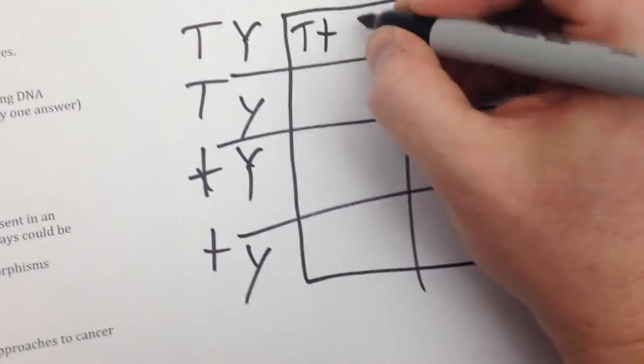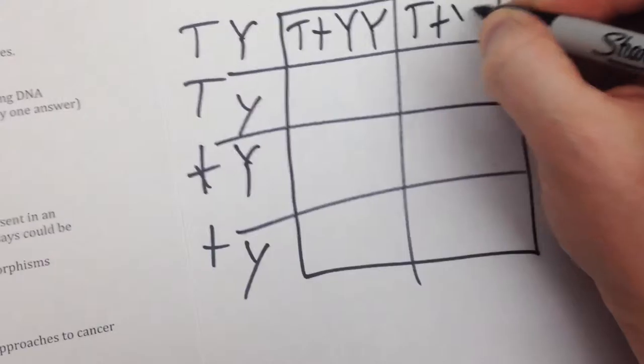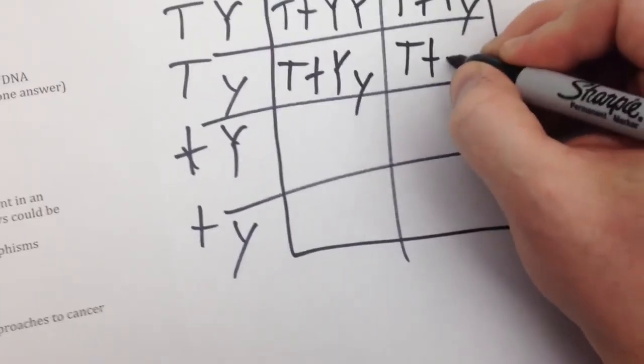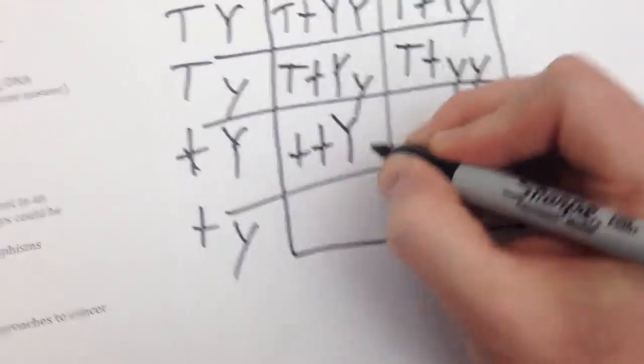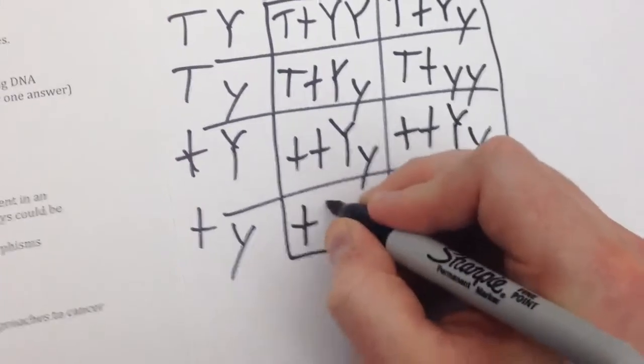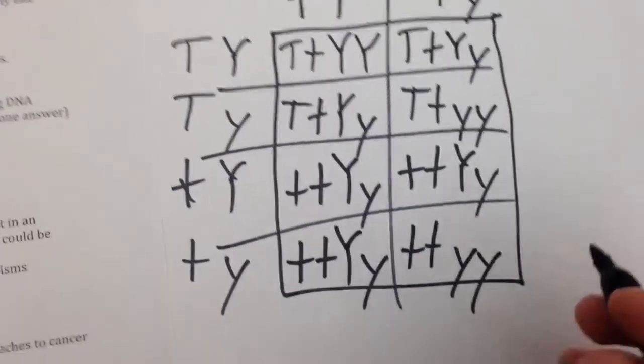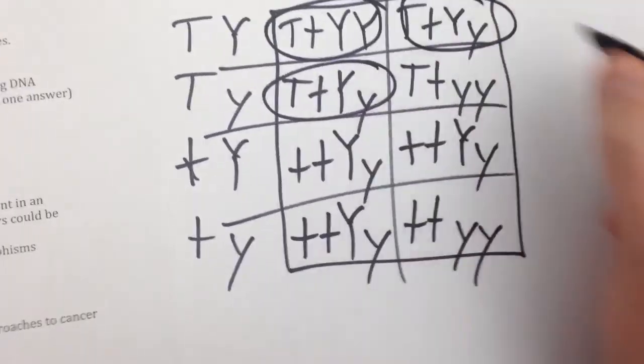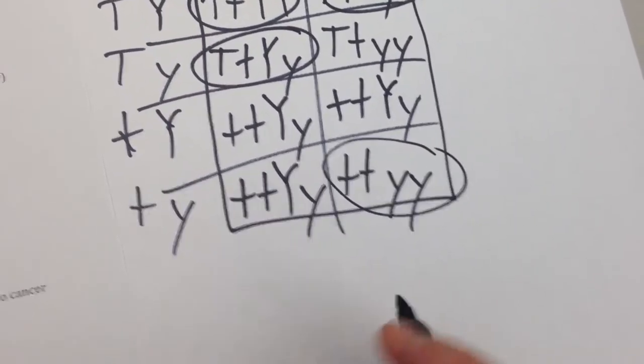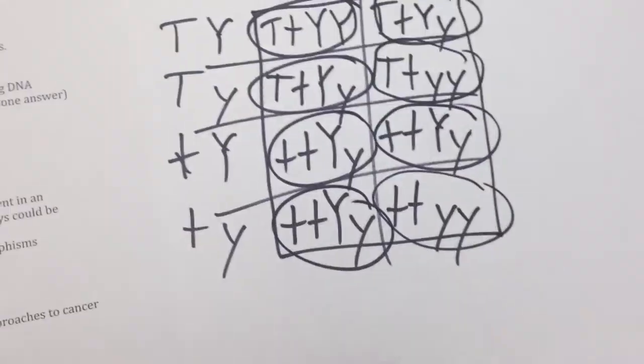...you realize that, in fact, the phenotype ratios from the problem match exactly what the problem states. So here we have three genotypes that give us tall with yellow seeds. We have one that gives us dwarf with green seeds, one that gives us tall with green seeds, and then the rest give us dwarf with yellow seeds, making up the last three genotypes.